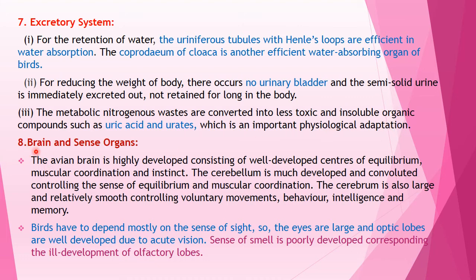The eighth anatomical adaptation is related to the nervous system — brain and sense organs. The avian brain is highly developed, with well-developed centres of equilibrium, muscular coordination, and instinct. The cerebellum is much developed and convoluted, controlling the sense of equilibrium and muscular coordination. The cerebrum is also larger and relatively smooth, controlling voluntary movements, behaviour, intelligence, and memory. Birds depend most on the sense of sight; the eyes are large and the optic lobes are well developed due to acute vision. The sense of smell is poorly developed, corresponding to the poor development of the olfactory lobes.